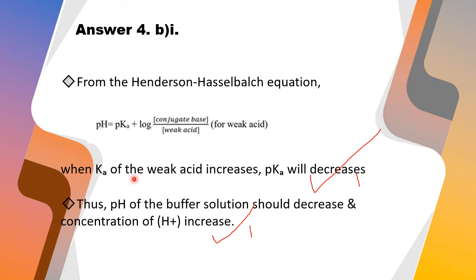From the Henderson-Hasselbalch equation, when Ka of the weak acid increases, pKa will decrease. Thus, pH of the buffer solution should decrease and concentration of H+ increases.